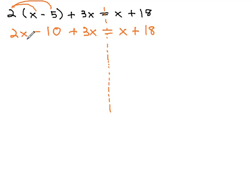And after distributing, we always want to check to see if we have any like terms. And you notice on the left side we've got 2x and 3x, which can be combined together to give us 5x minus 10 equals x plus 18.